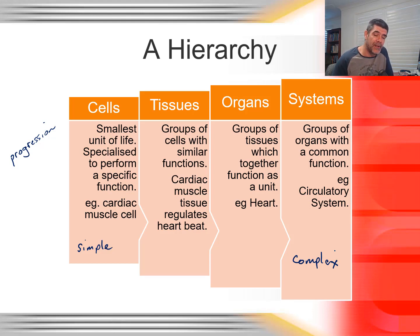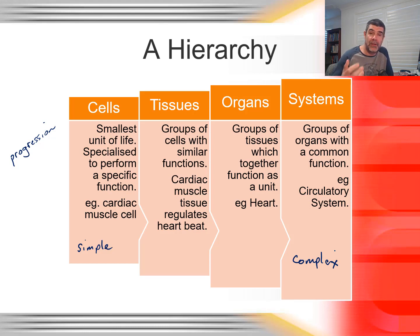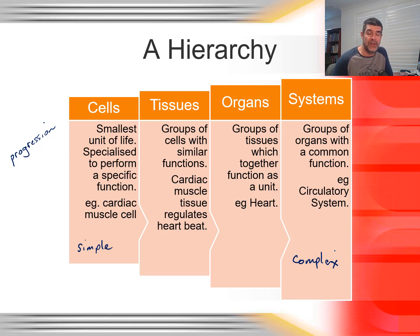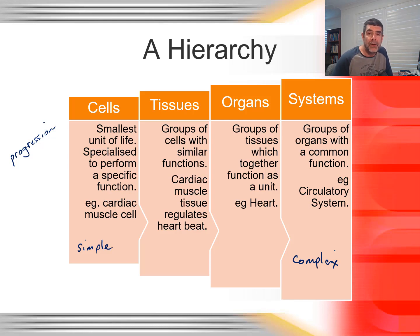In the last video we looked a little bit at some of the different types of cells. We've also talked about cellular differentiation and the process of producing specialized cells — cells that have a specific function. Those functions often link very closely to the structure of the cell itself and also the distribution of organelles within the cell. Whenever we look at a hierarchy like this, there are always other levels.